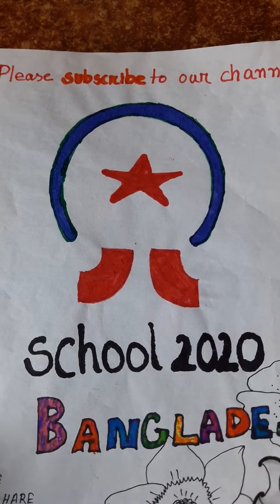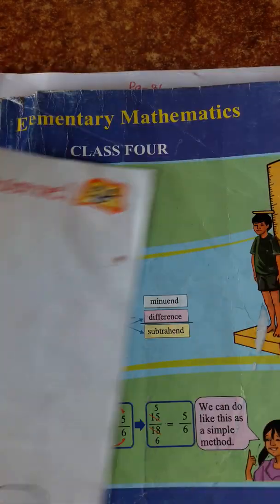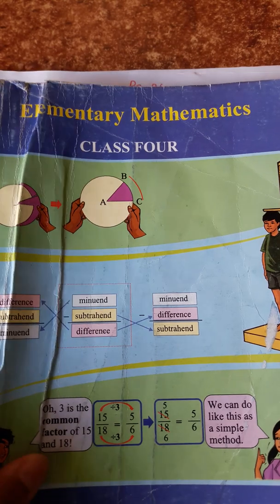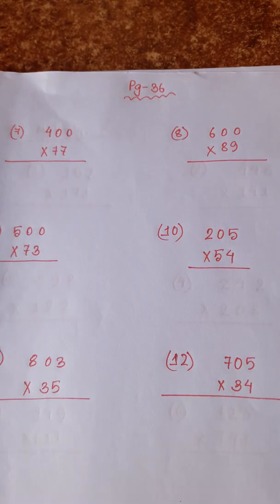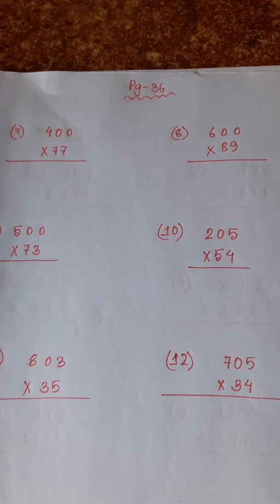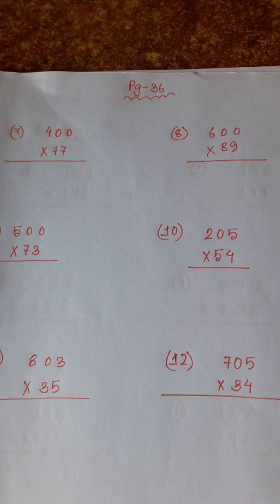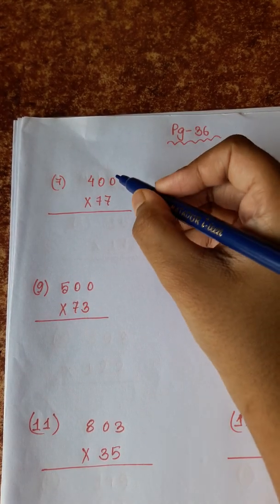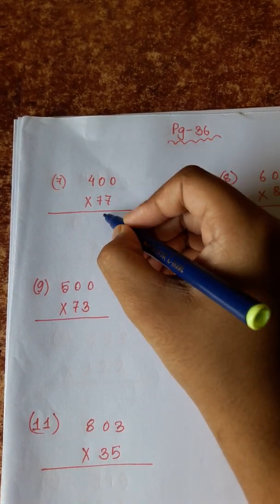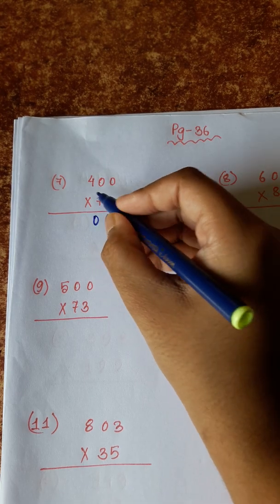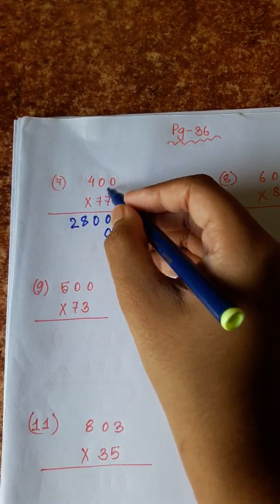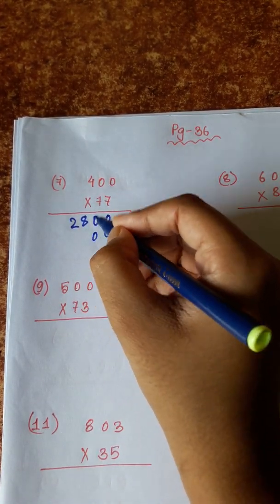Welcome to School 2020 at Camera Elementary Mathematics class, page 36, multiplication scoreboard. The first one: seven zeros are zero, seven zeros are zero, seven fours are 28, seven zeros are zero.